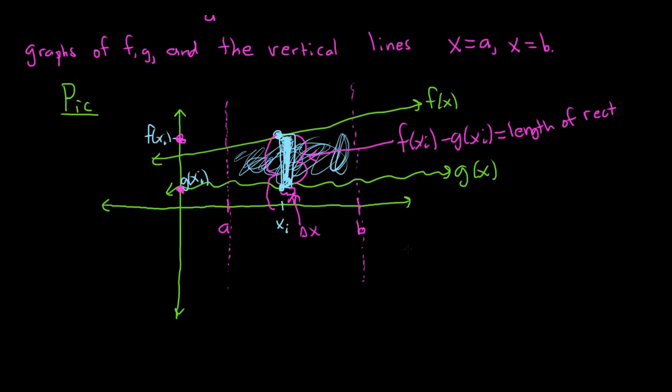So what you would do is you would say that the area of the ith rectangle would be f(xi) minus g(xi) times some delta x. And this is really delta x sub i, right? Because the rectangles can have different lengths, different widths.